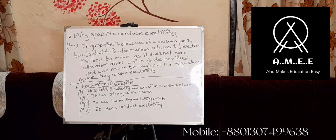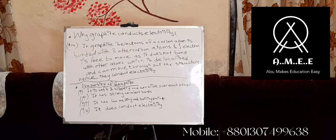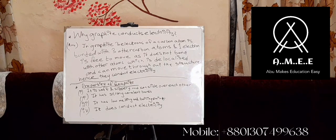Properties of graphite: graphite has basically four properties. First, it is soft and slippery and its layers can slide over each other. Second, it has strong covalent bonds within its layers. Third, it has a relatively low melting and boiling point compared to diamond. Fourth, it does conduct electricity.